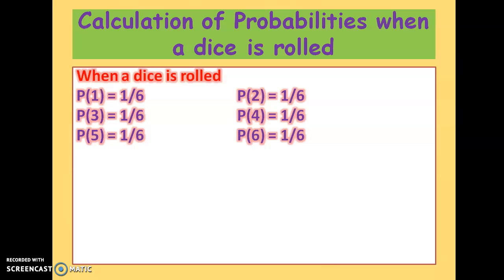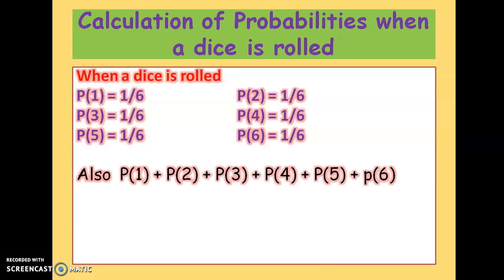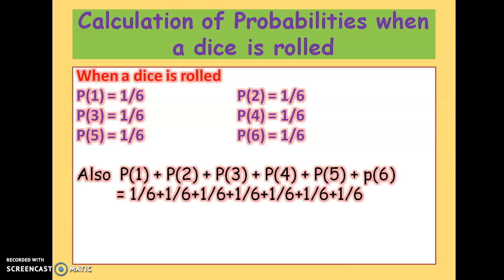Similarly, the probability of getting 2 on the top face is 1 by 6, and the probability of getting 6 on the top face is again 1 by 6. When you add all these probabilities — probability of 1 plus probability of 2 and so on up to probability of 6 — you get 1/6 + 1/6 six times, which equals 6 by 6 = 1. So the sum of all elementary events in a random experiment is 1.